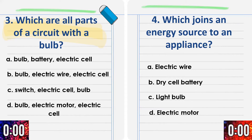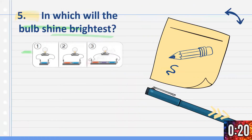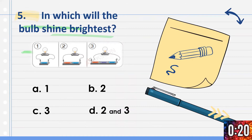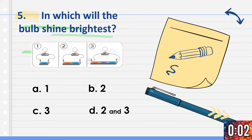Time is up. For number 5: In which will the bulb shine brightest? Is it 1, 2, or 3? A) One. B) Two. C) Three. D) Two and three. Remember that the bulb will shine brightest if there are more batteries. Time is up.